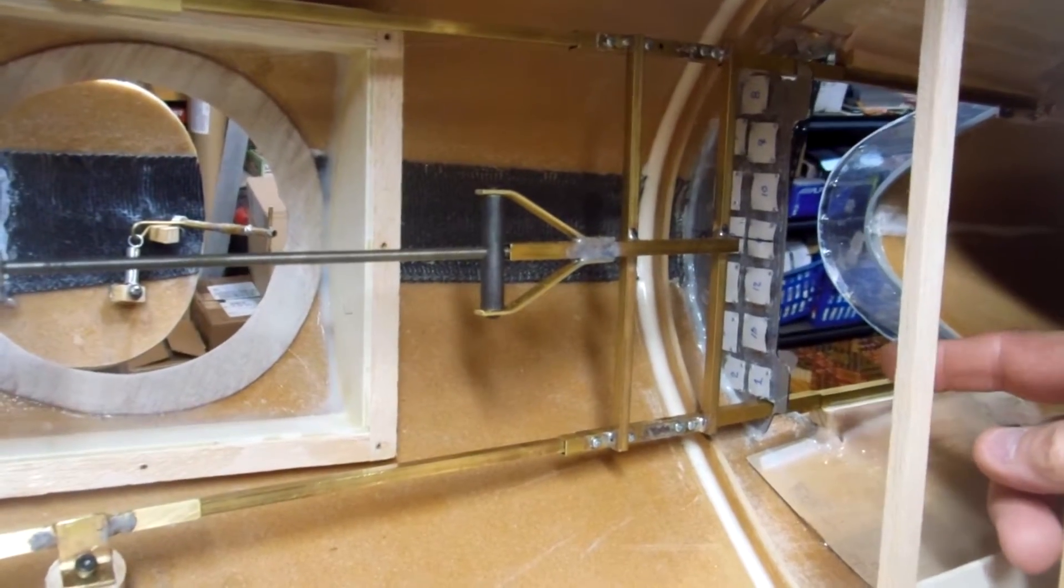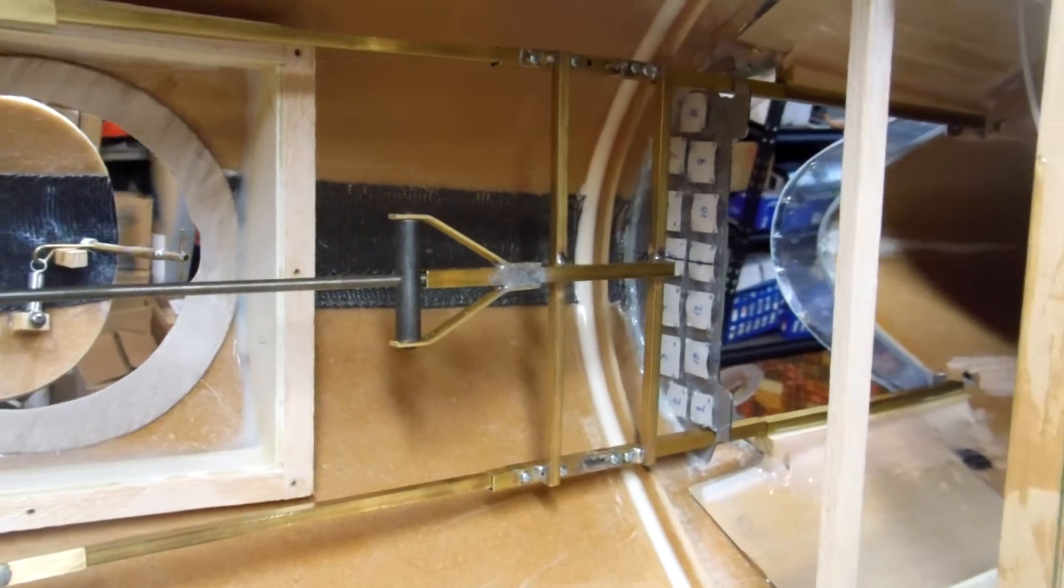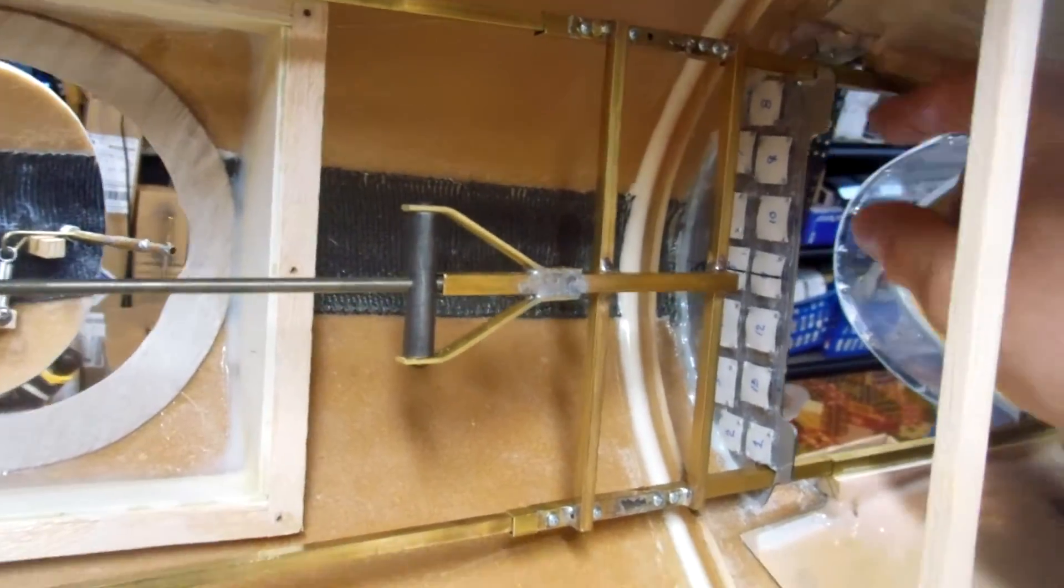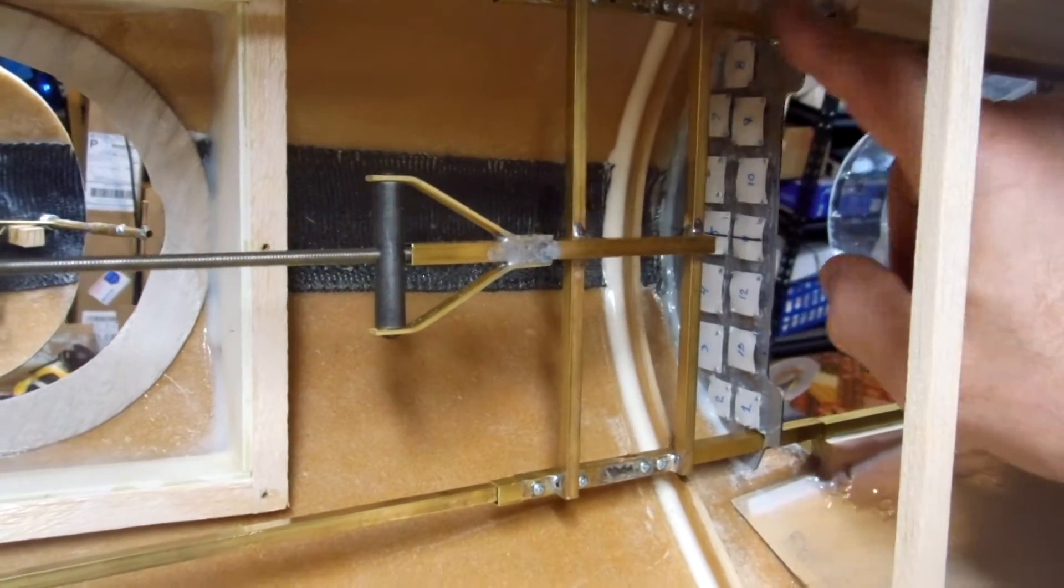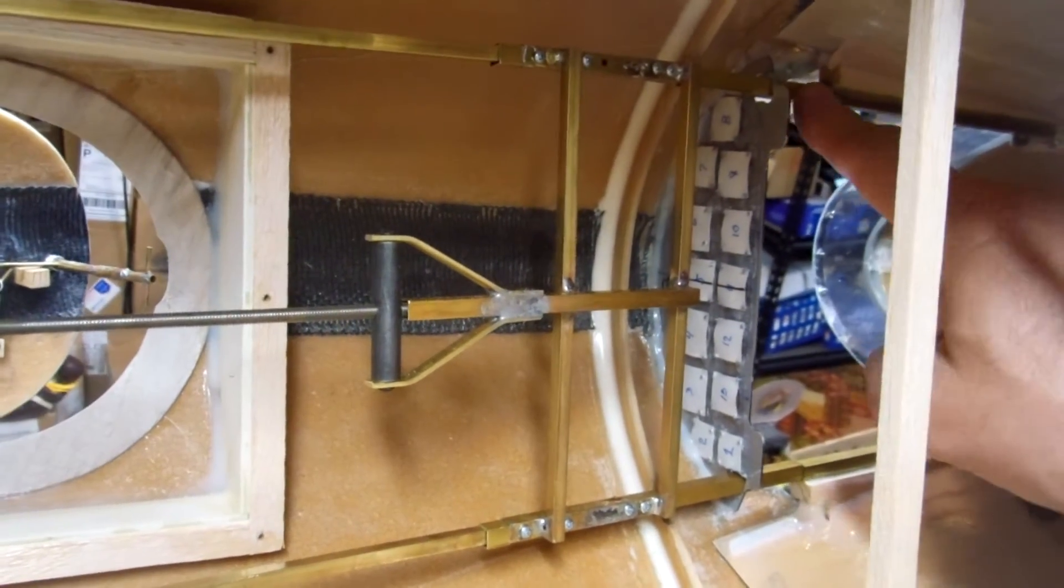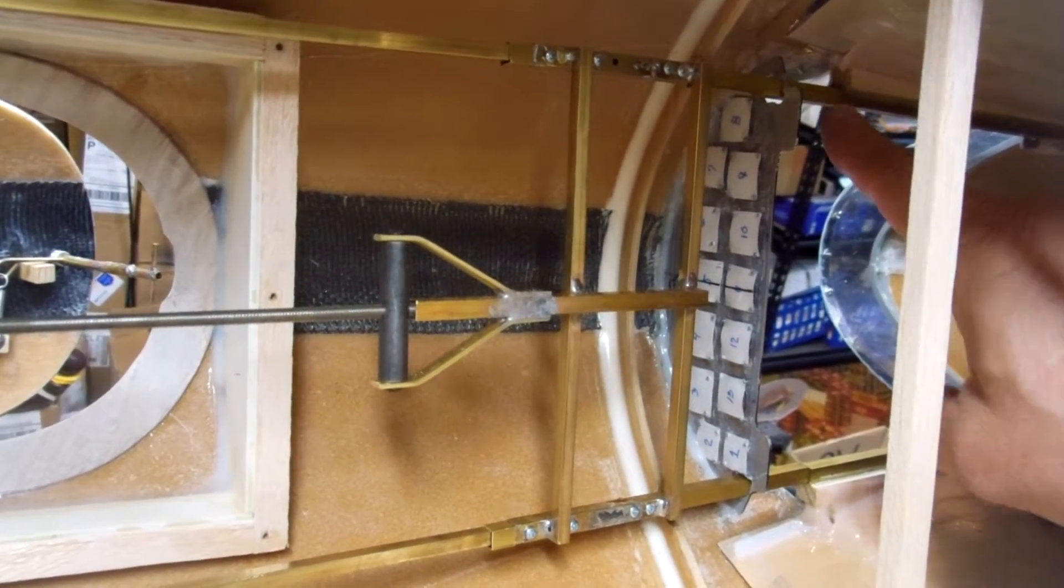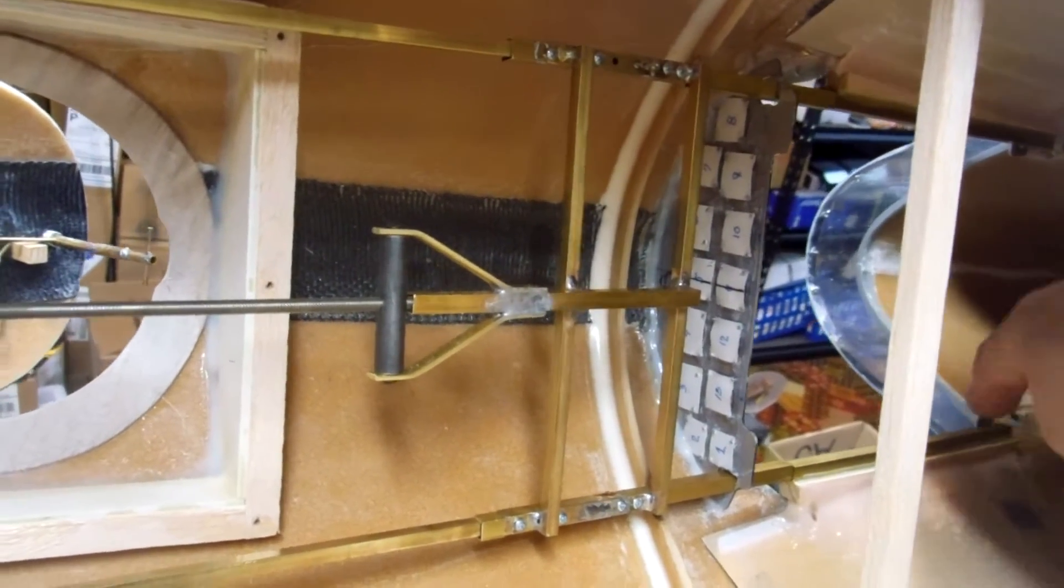These square guides I have in here form a stop when the canopy is open, so there's never a load against the ends of the travel on the rails.